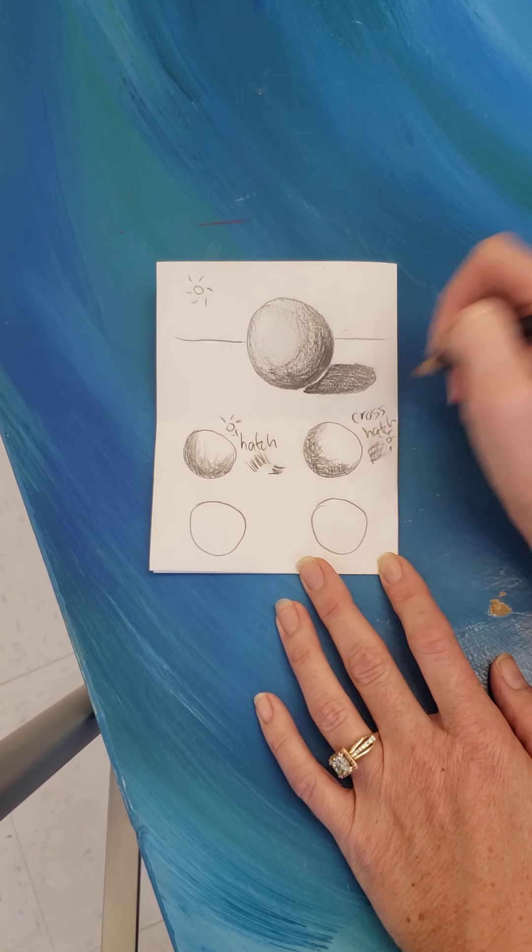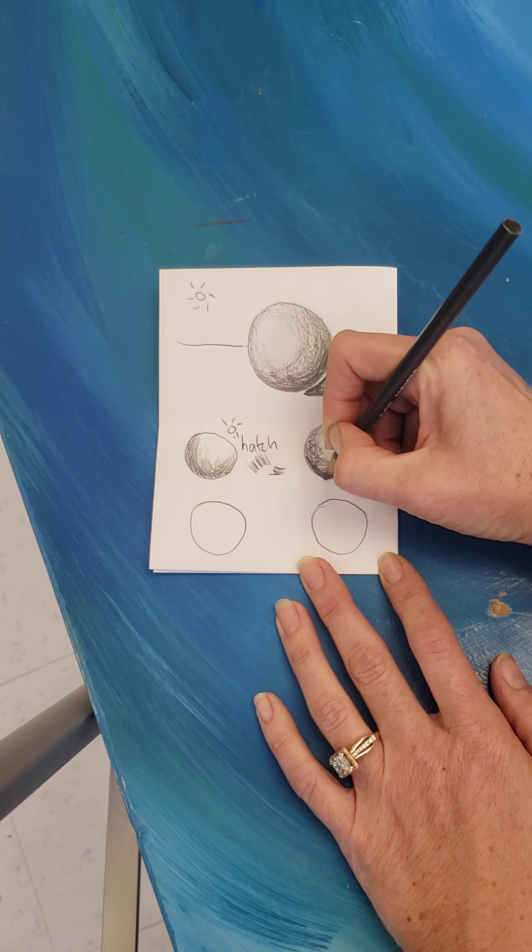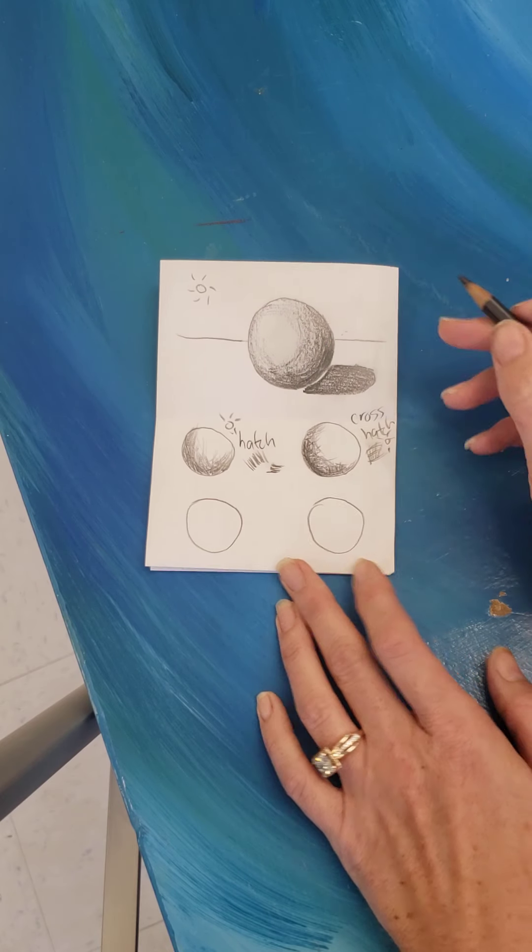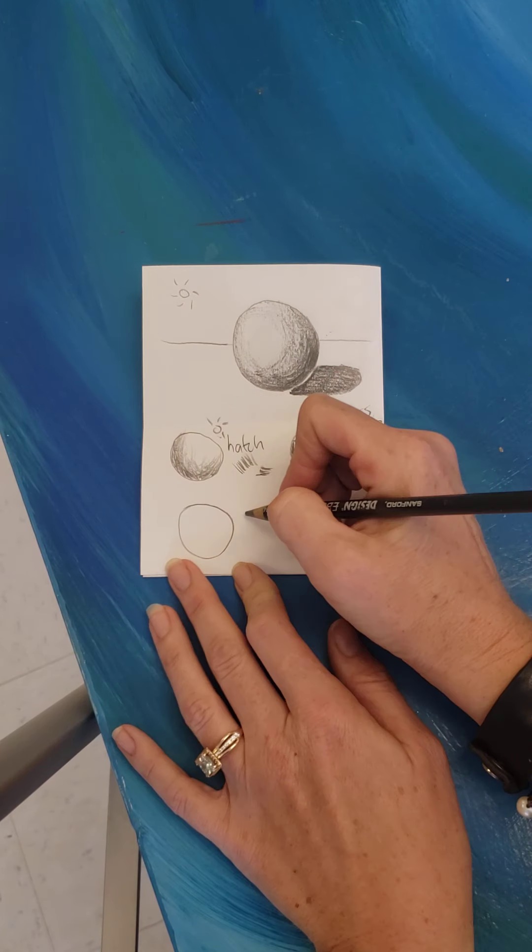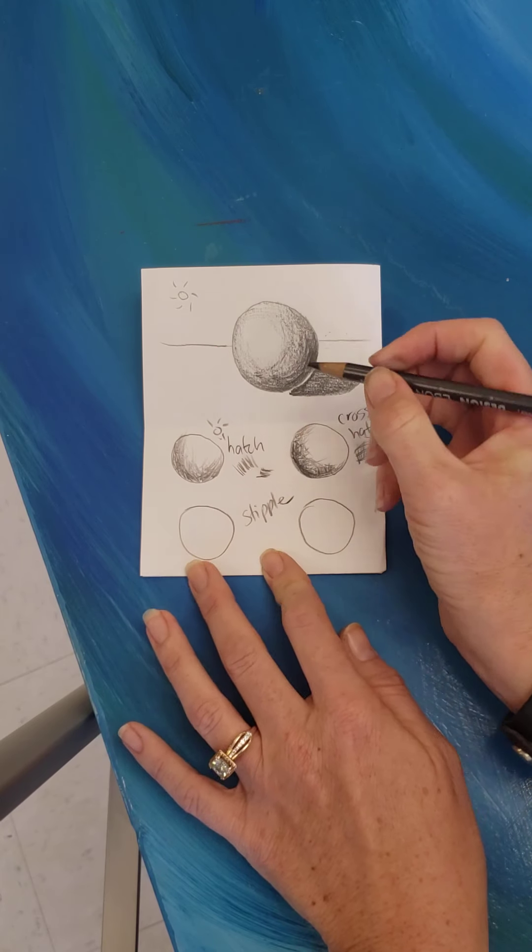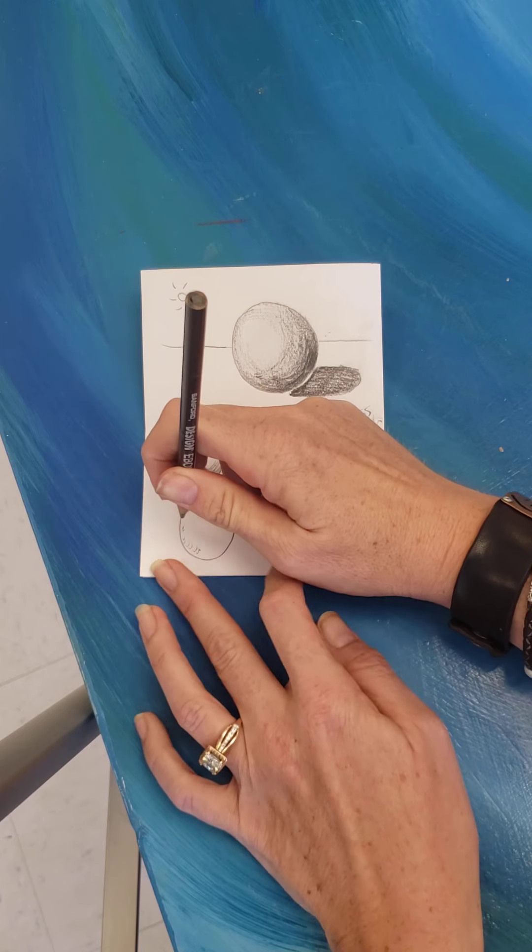Notice I'm using a drawing pencil again today because then I can go back in and get real dark, which is harder to do with a regular pencil. You can do it, but it's harder to do. The third is called stippling. Stipple. S-T-I-P-P-L-E. I don't use this one a lot. It's dots.